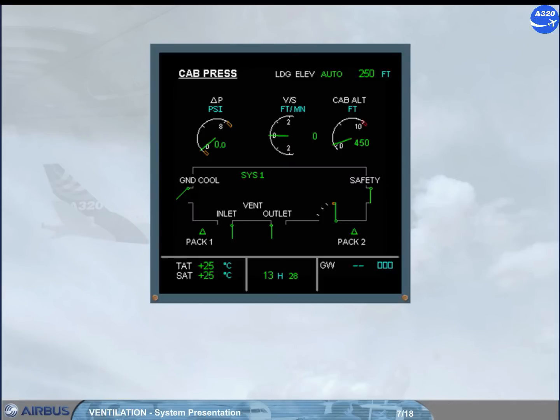A section of the E-CAM CAB PRESS page displays avionics ventilation system information.